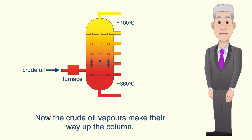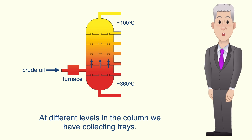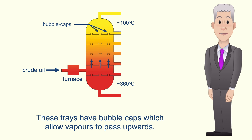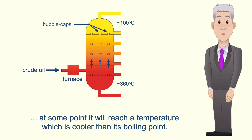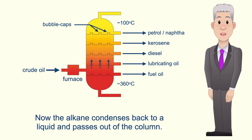The crude oil vapors make their way up the column. At different levels in the column we have collecting trays. These trays have bubble caps which allow vapors to pass upwards. As each alkane moves up the column, at some point it will reach a temperature which is cooler than its boiling point. The alkane then condenses back to a liquid and passes out of the column.